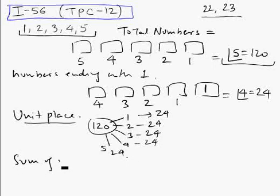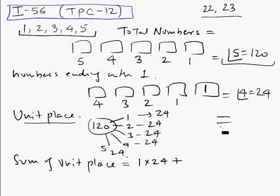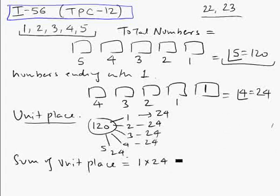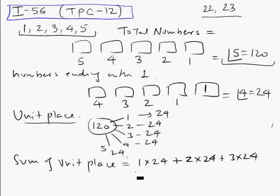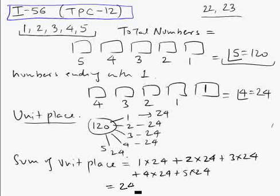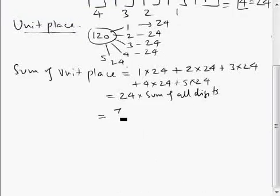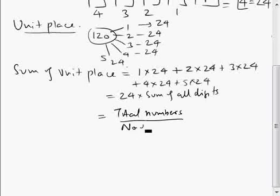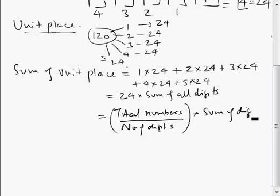To find the sum of the unit place: digit 1 appears 24 times, digit 2 appears 24 times, and so on. So we add 1 twenty-four times, add 2 twenty-four times, add 3, 4, and 5 each twenty-four times. This becomes 24 times the sum of all digits, which can be written as: (total numbers ÷ number of digits) × sum of digits.